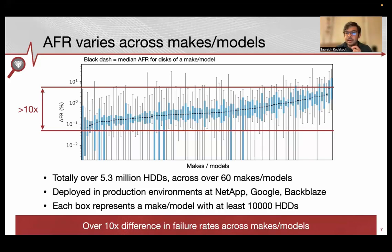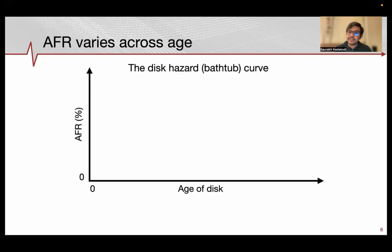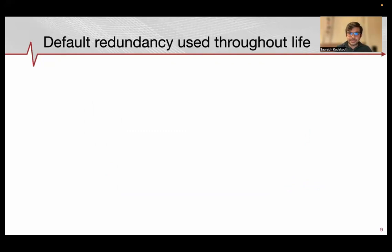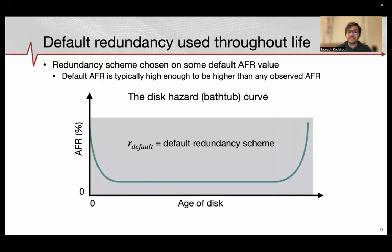The classic disk hazard curve, or bathtub curve, shows disk age on the x-axis and AFR on the y-axis. At birth, a disk goes through high AFR in what is called infant mortality, followed by a low stable failure rate called useful life, and finally the high AFR wear-out phase. Today, the same overly protective redundancy scheme is used throughout a disk's lifetime. As shown, all AFR variations are comfortably below what the scheme can tolerate, meaning data is always overly protected. We call this the R default scheme.